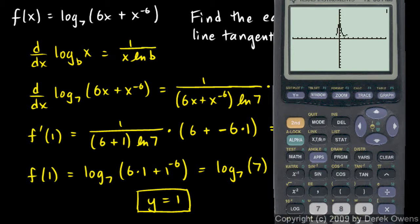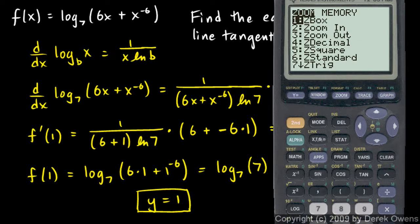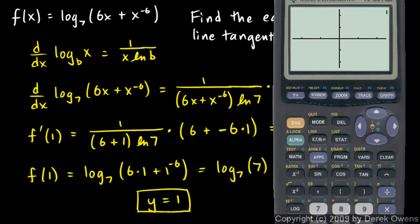And this is what the function looks like when we graph it. Now we're concerned with the point at x equals 1. So let's zoom in a notch right there. I'm just going to hit zoom 2 to zoom in. And sure enough, right there at x equals 1, it looks like the function does in fact have a value of 1.